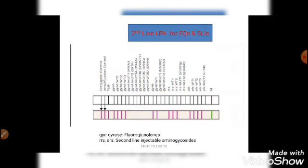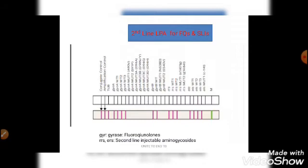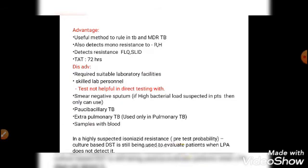There is also a second-line LPA. The previous slides showed the first-line LPA covering first-line drugs rifampicin and isoniazid. If resistance is detected, we proceed to second-line LPA for fluoroquinolones and second-line injectable drugs. The genes used for detecting resistance in second-line LPA are the gyrase gene (GYR) for fluoroquinolones, and RRS and ERS genes for second-line injectable aminoglycosides.